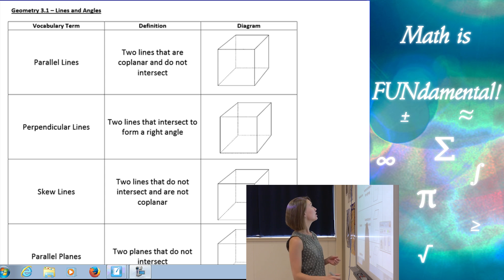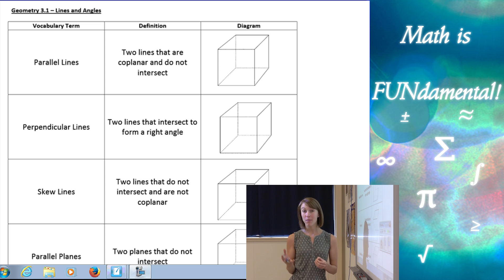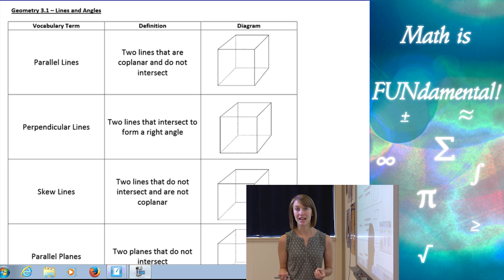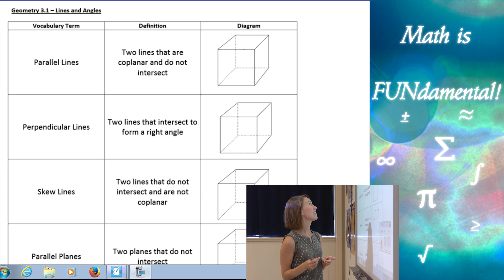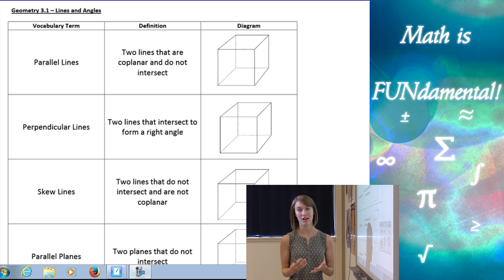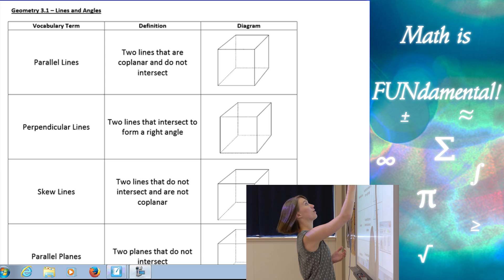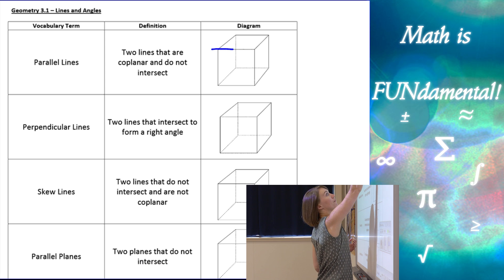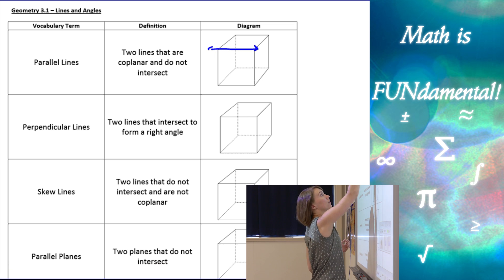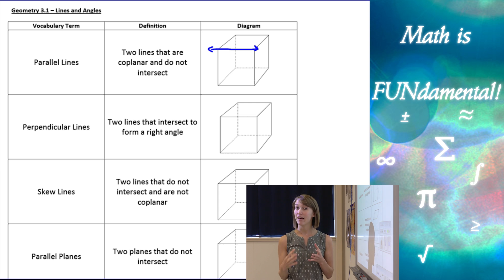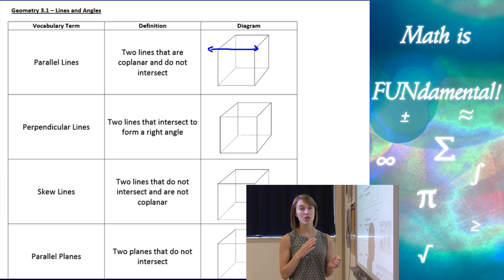First, we're going to talk about parallel lines. You probably already know the term parallel lines — it's when two lines don't intersect. We're going to add on to that definition today and say that we need two lines that are coplanar and do not intersect. So it has to share the same plane.